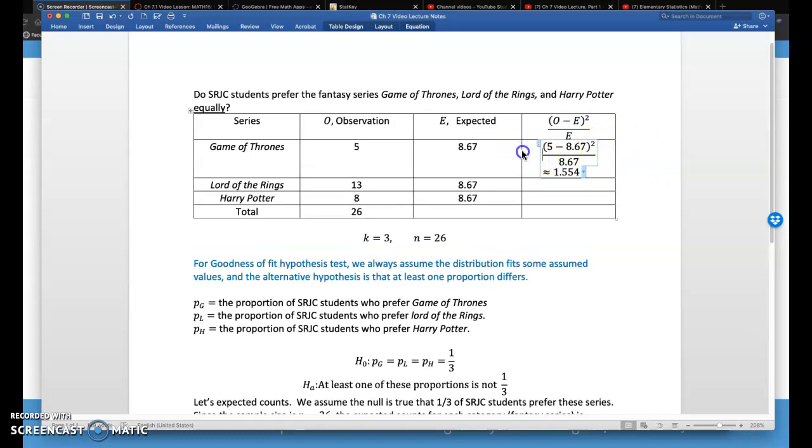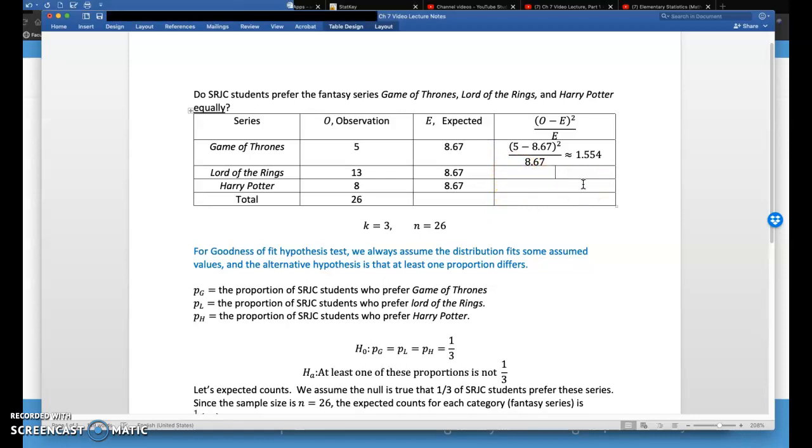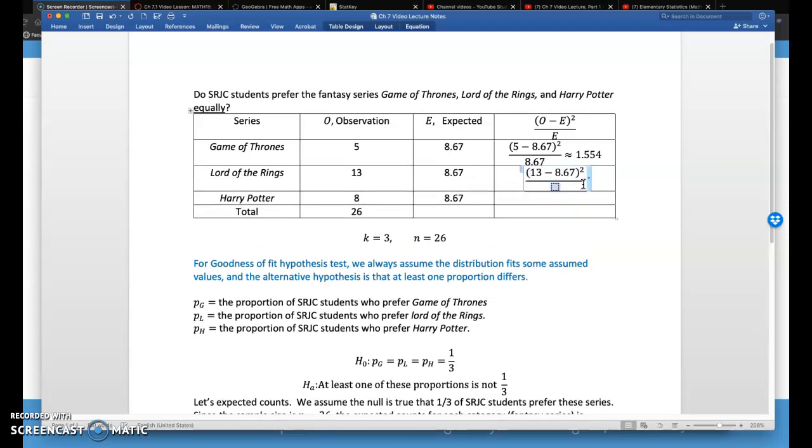For the next category, Lord of the Rings, we want to find the observed, 13, minus the expected, 8.67, square that value, then divide that whole thing by 8.67. I'm going to throw this in my calculator now, and that ends up being 2.163.